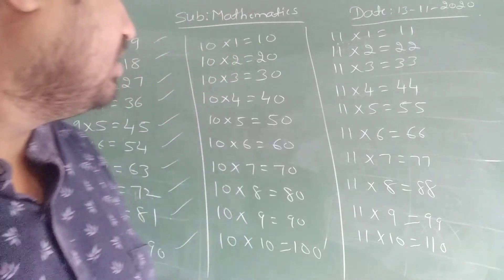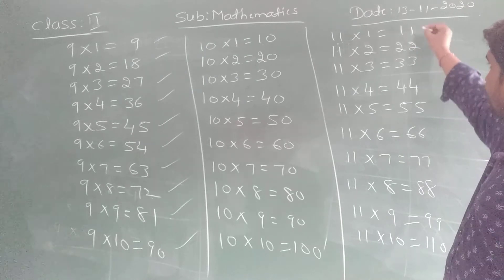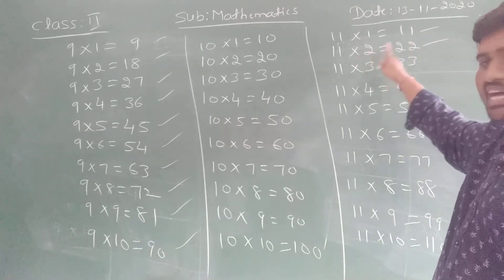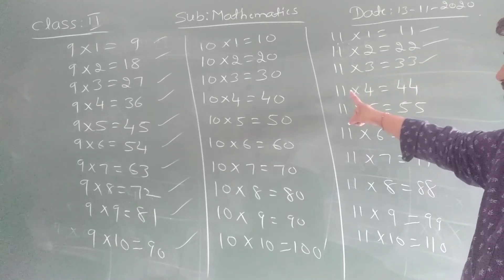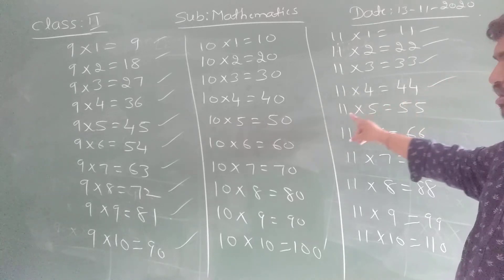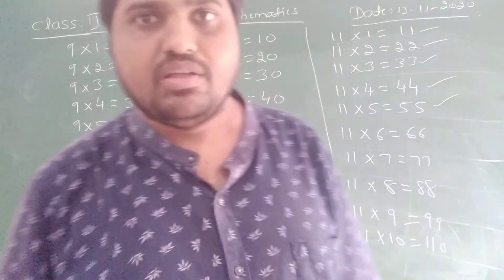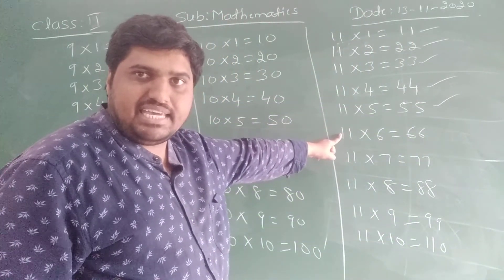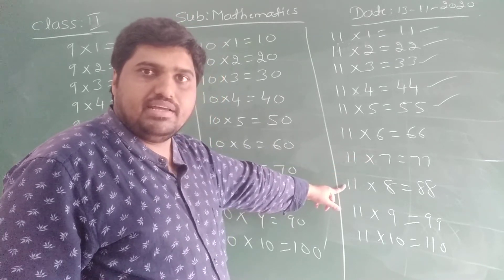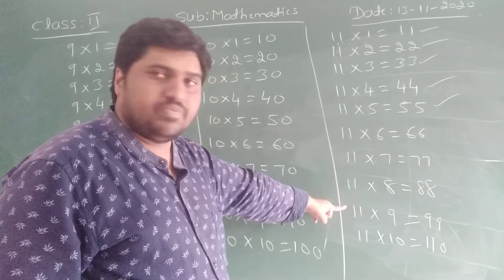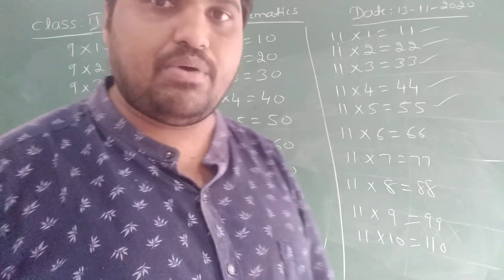Okay children, now come to the 11 times table. 11, 1 is 11. 11, 2 is 22. 11, 3 is 33. 11, 4 is 44. 11, 5 is 55. 11, 6 is 66. 11, 7 is 77. 11, 8 is 88. 11, 9 is 99. 11, 10 is 110.